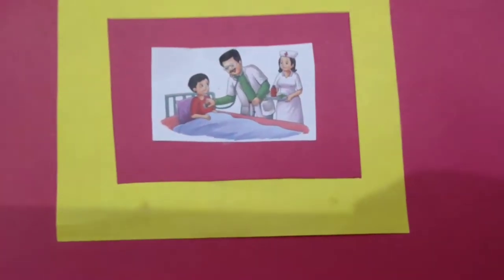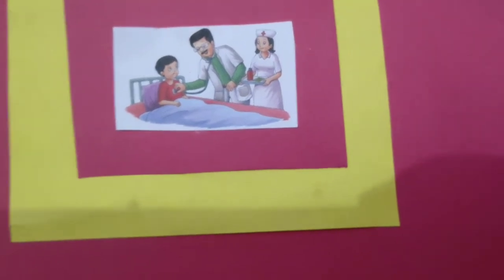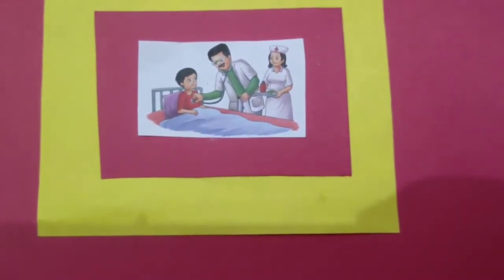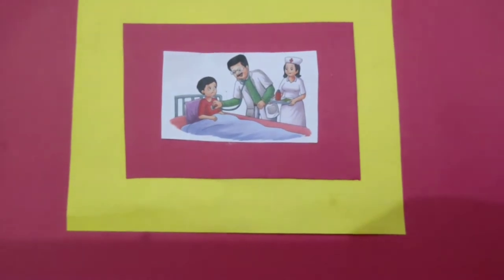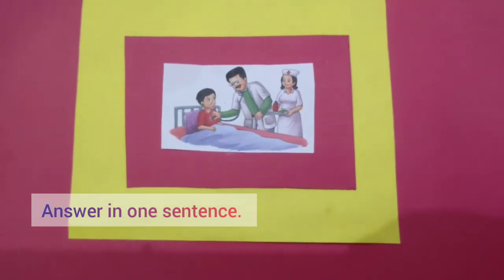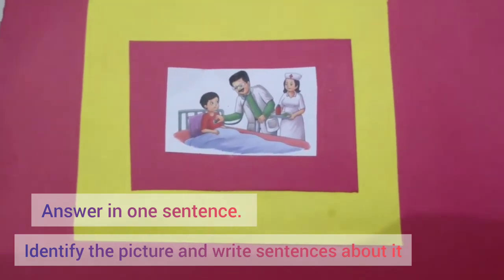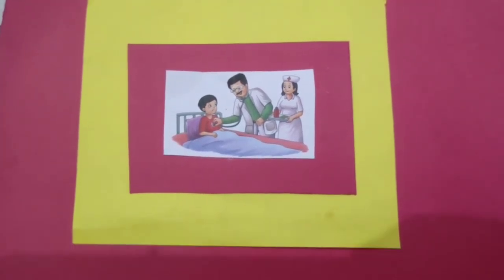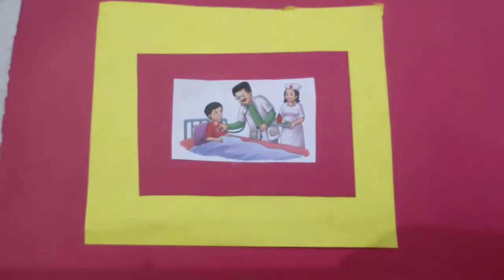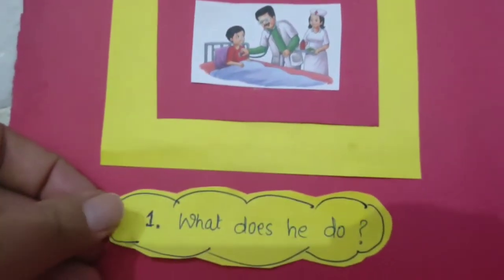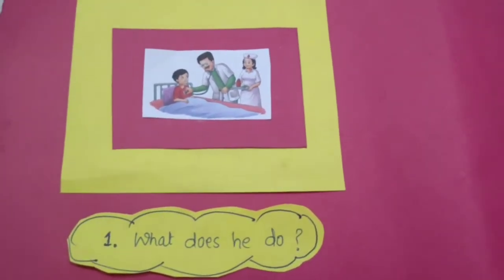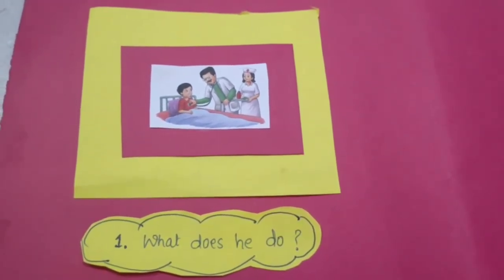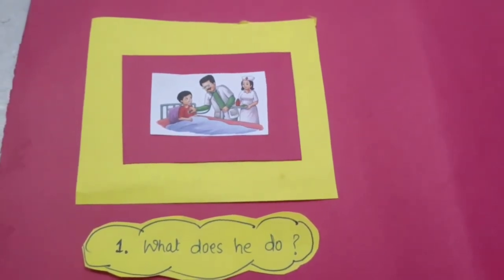So today I have taken a picture of a doctor. Now let's see, when you get a picture, how to think about it — what kind of sentences you need to write. Today in this video I am covering two things: one is writing the answer in one sentence, and also identifying the picture and writing about it. So first let's talk about question answers in one sentence. For example, you have got the question: what does a doctor do? Whenever you get any picture or question, you should first answer what does this person do, what does this community helper do to help us?